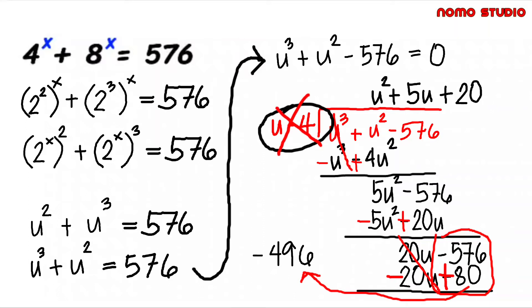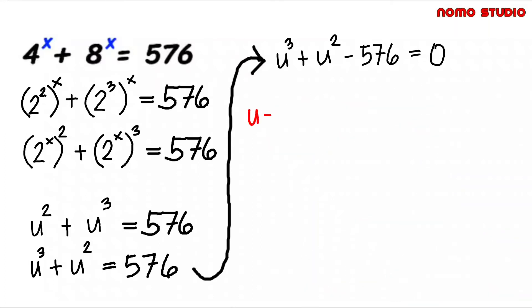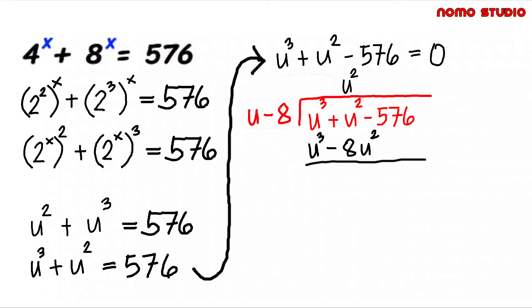So let's try u minus 8. We will also use long division here. U cube divided by u, that is u squared. U squared times u minus 8, that is u cube minus 8u squared. Change all signs, so this is 0. Then u squared plus 8u squared, that is 9u squared. Bring down negative 576.